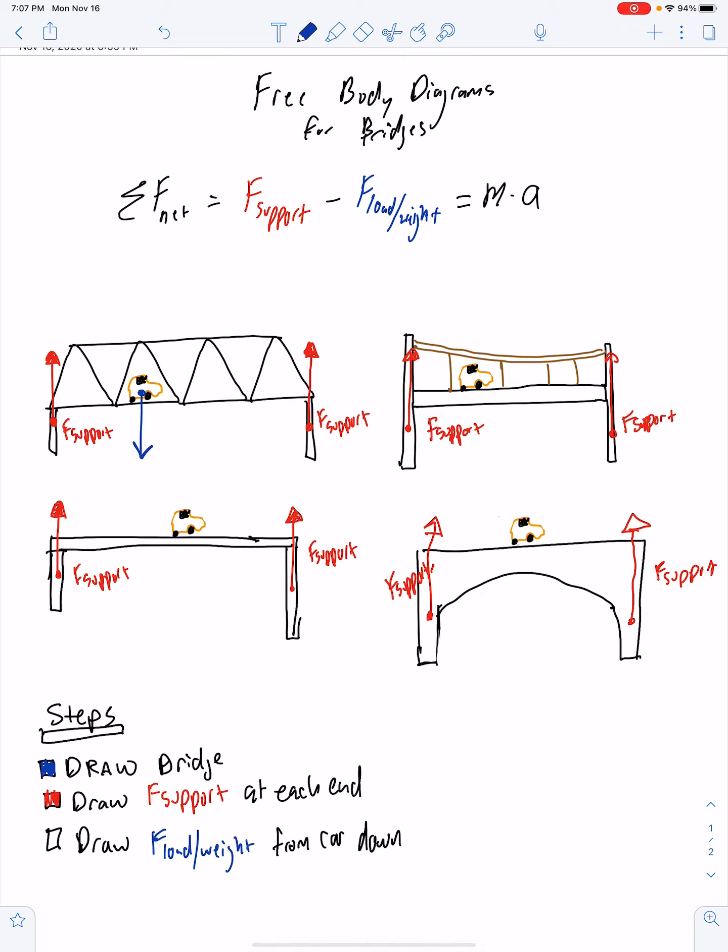So we're just going to group those all as a single load slash weight. So go ahead and draw that from the car that you drew going downwards. So F of load slash weight.